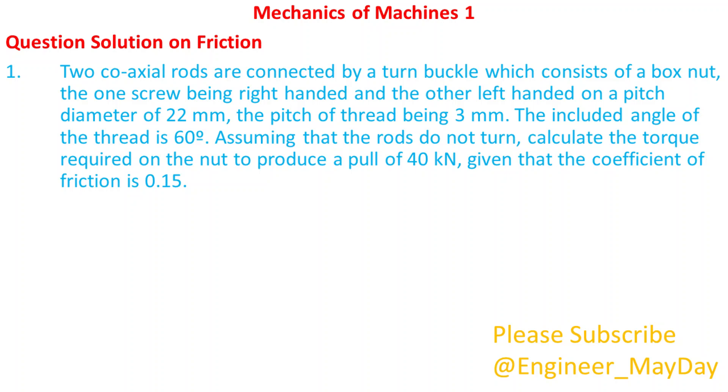Two coaxial rods are connected by a turn buckle which consists of a box nut, the one screw being right-handed and the other left-handed on a pitch diameter of 22mm, the pitch of thread being 3mm. The included angle of the thread is 60 degrees. Assuming that the rods do not turn, calculate the torque required on the nut to produce a pull of 40 kN, given that the coefficient of friction is 0.15.